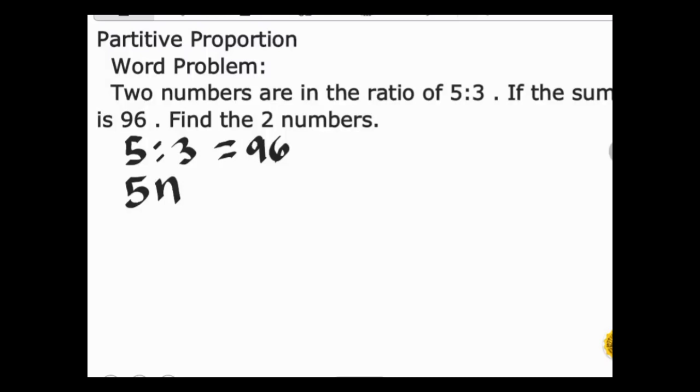Now find the two numbers in the ratio. We have 5, then substitute the value of our unknown number which is 12. Then 5 times 12 is 60. This is our first number.